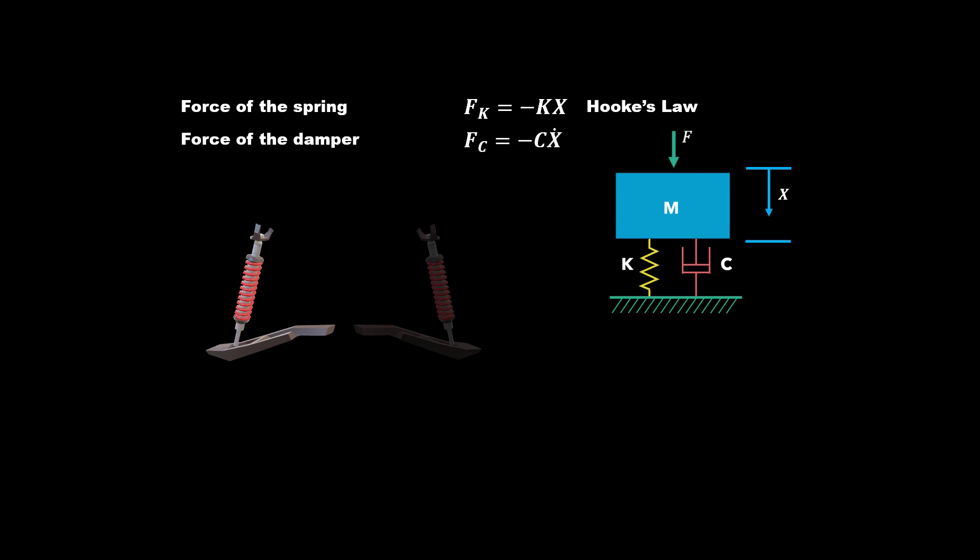Next we have our damping force, which is minus C X dot. If you're unfamiliar with dot notation, what we are doing is taking the derivative of displacement, so X dot would be the velocity. The reason both C and K are negative is because they are pushing against our external force, and they are the restoring force of both the spring and the damper.